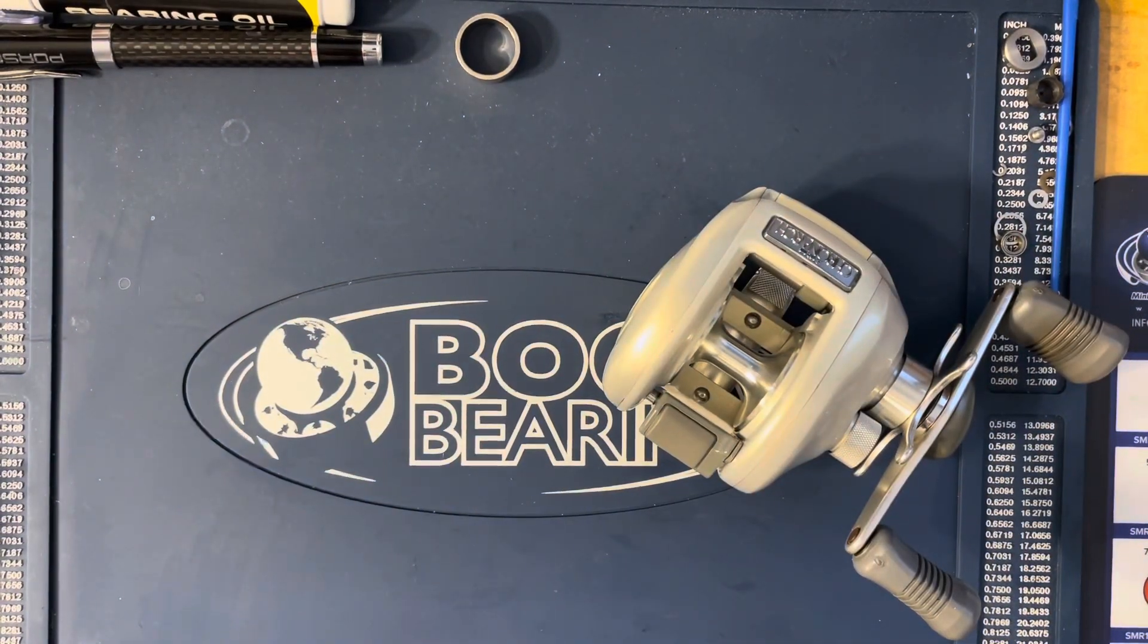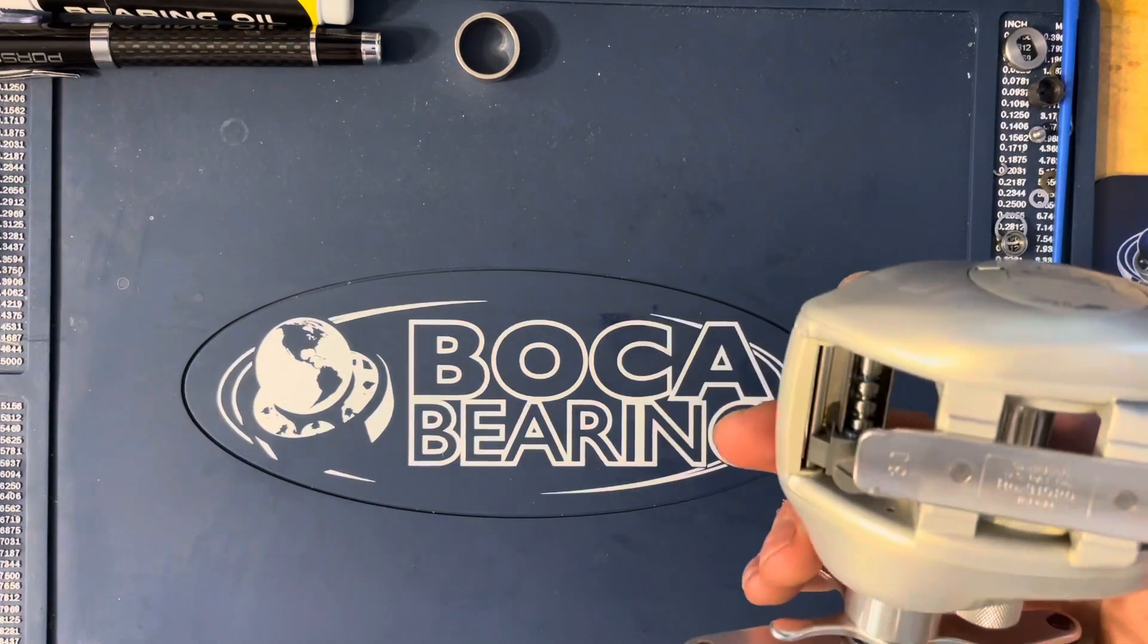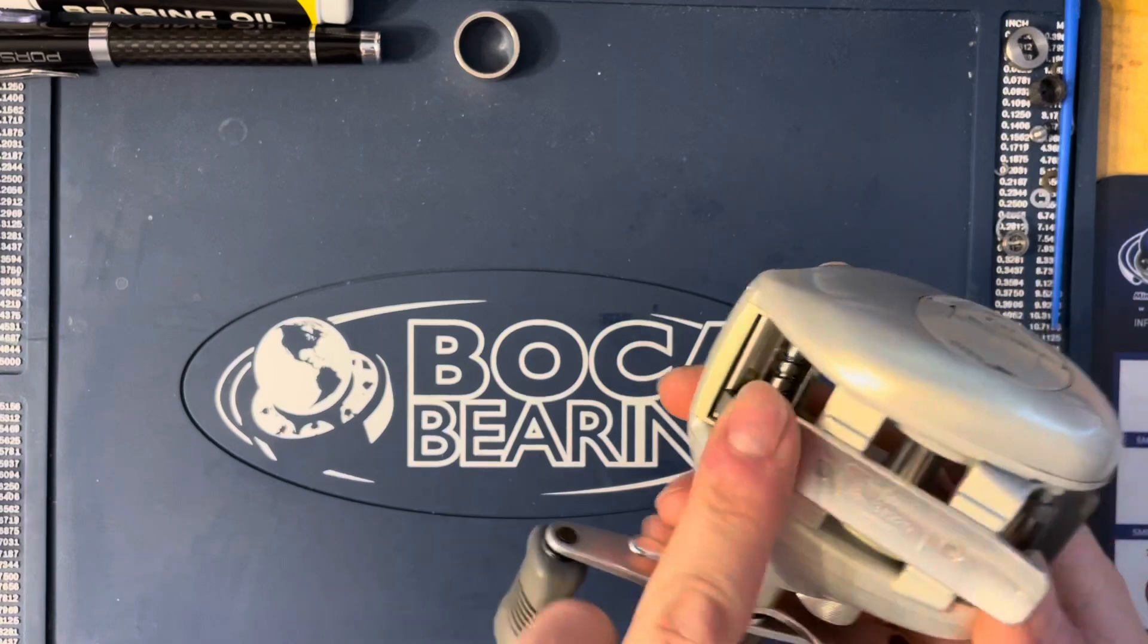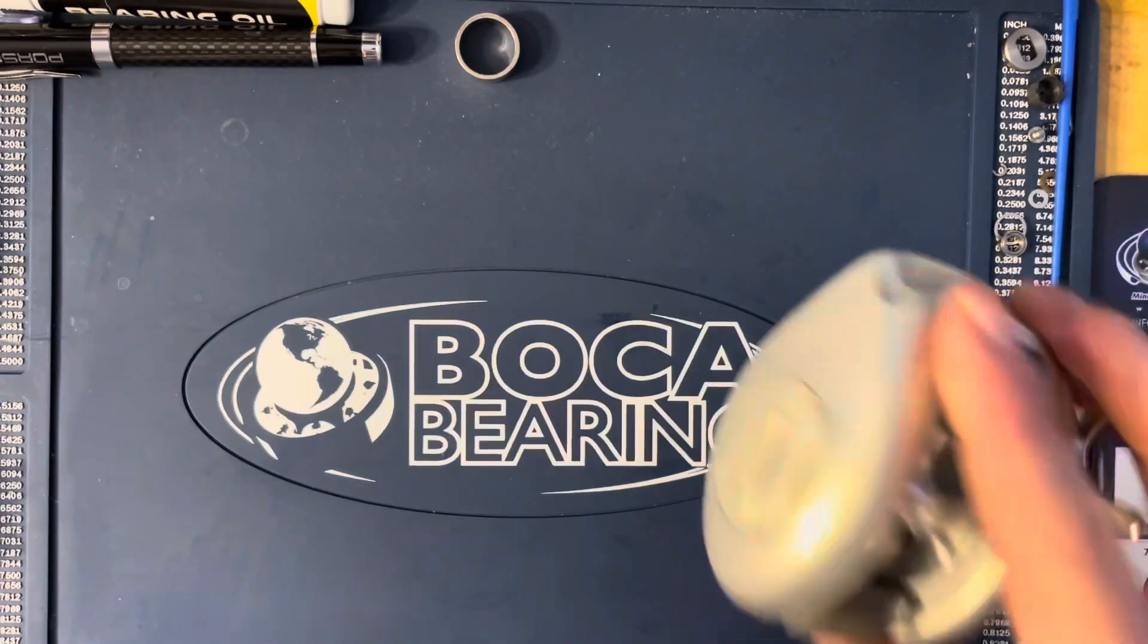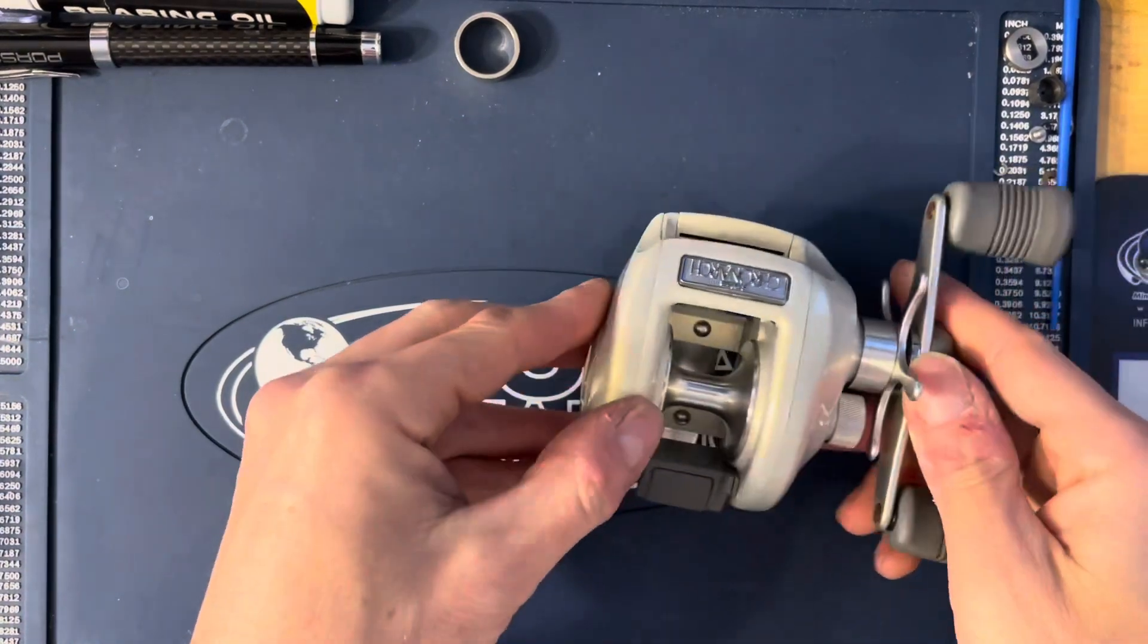Of course they always change models and years and manufacturers, all that kind of stuff. But this was made in Japan. The Japanese reels are typically the best reels you could buy. So that is it, this is the Shimano Cronarch Pearl from 1999, 2000.